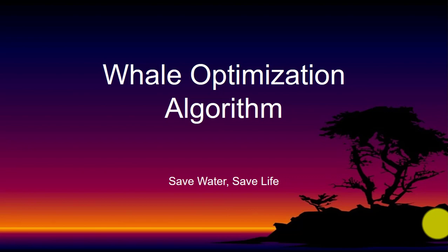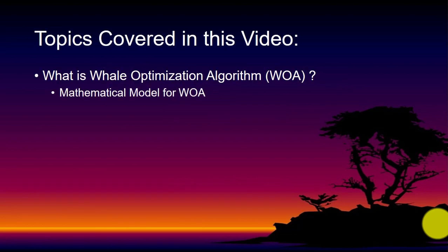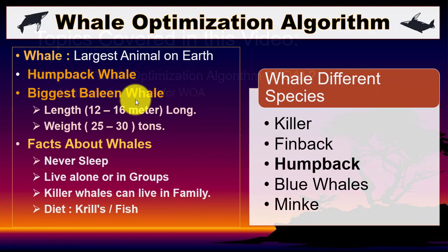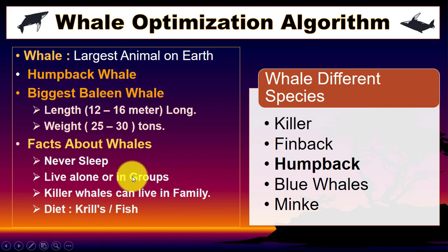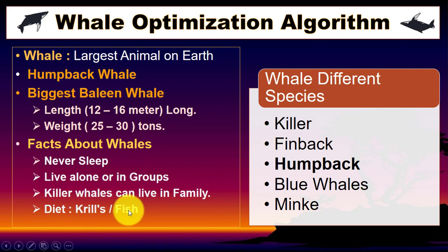Hello, in this video I will discuss the Whale Optimization Algorithm. Topics covered: what this algorithm is all about and its mathematical model. As we all know, the whale is the largest animal on earth, and we have different whale species like killer whale, finback, humpback, and blue whales. Some facts: they never sleep, they live alone or in groups, and killer whales can live in family groups. Their diet is krill or fish.